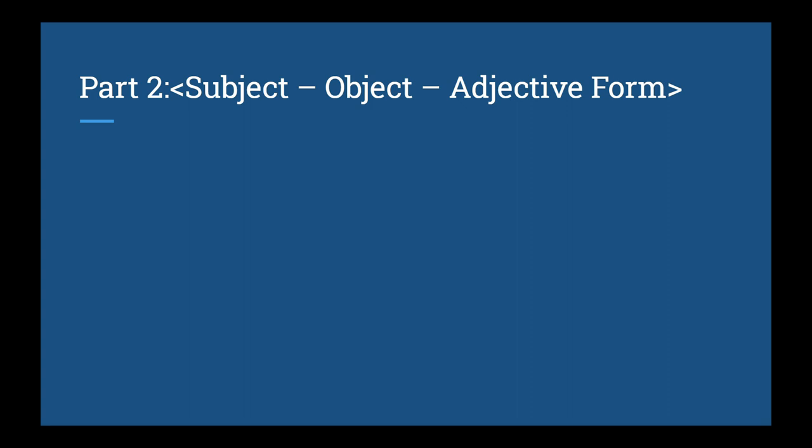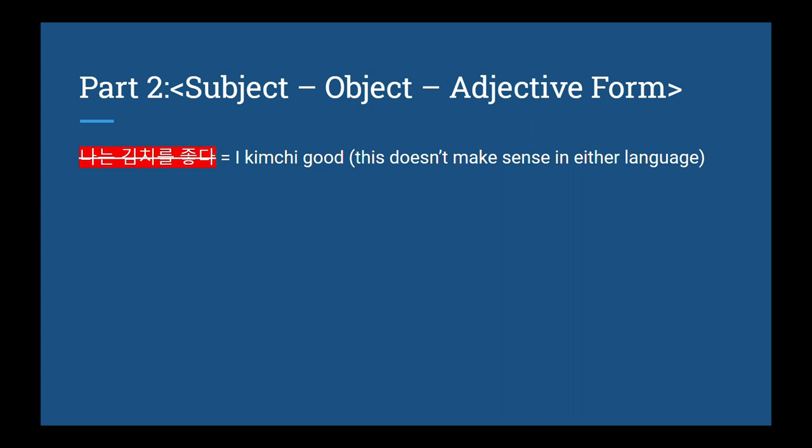Alright, part two. We've mentioned multiple times — in this video and in other videos online — we consistently hammer in the fact that adjectives can't act on objects, so you're never going to use the object marking particles with adjectives. For example, you could not say 나는 김치를 좋다 — it makes no sense. You can still have an object in the sentence, but the adjective cannot act on it, so you can't use the object marking particle. We usually use 이/가 with it — so 저는 김치가 좋아요, I like kimchi. In English there's obviously an object, but in Korean it's not marked as an object.